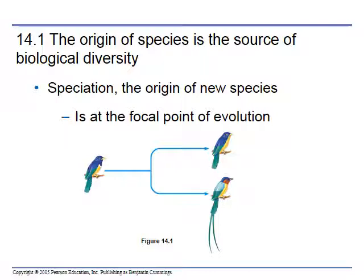What we see out in nature isn't one highly adapted version. We see tons of variety, many, many different species. And how species evolve — something called speciation — the origin of a new species is really the focal point of evolution.